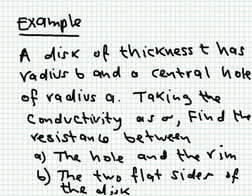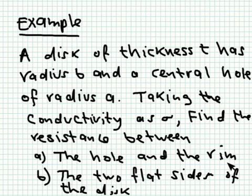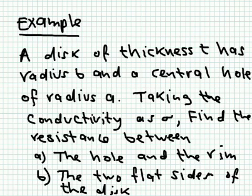Let's take an example on the calculation of resistance. We have a disk of thickness T and radius B, with a central hole of radius A. It looks like two cylinders: the dielectric is in the area between them, with the inner cylinder having radius A and outer cylinder radius B. We can find the resistance in two ways: between the hole and the outer rim, where current flows in the radial (rho) direction, or between the two flat sides of the disk, where current flows in the Z direction. One is undesired (radial), the other is desired (axial).